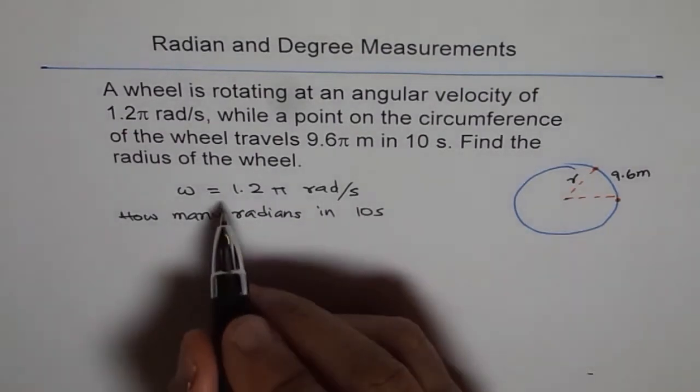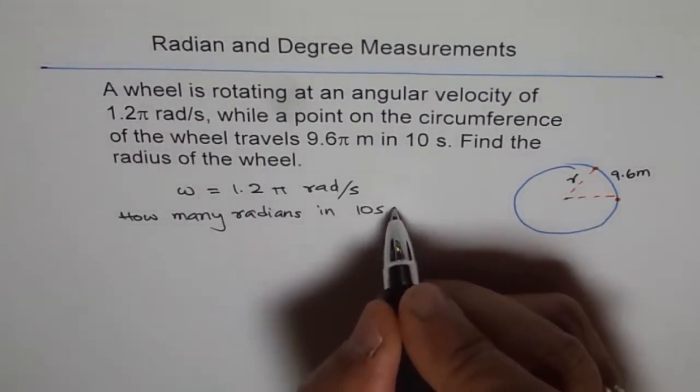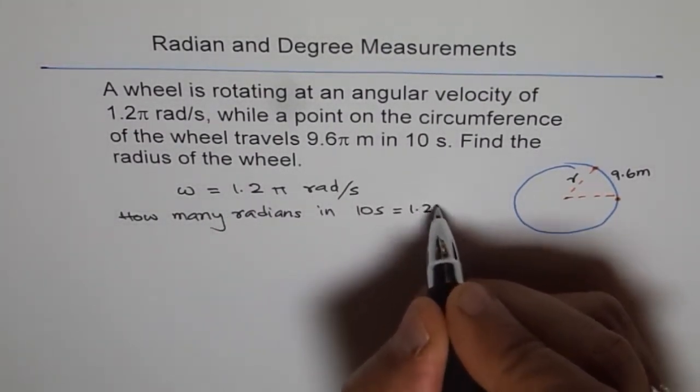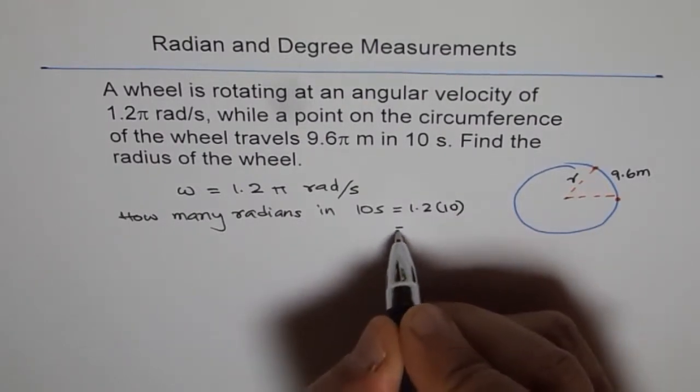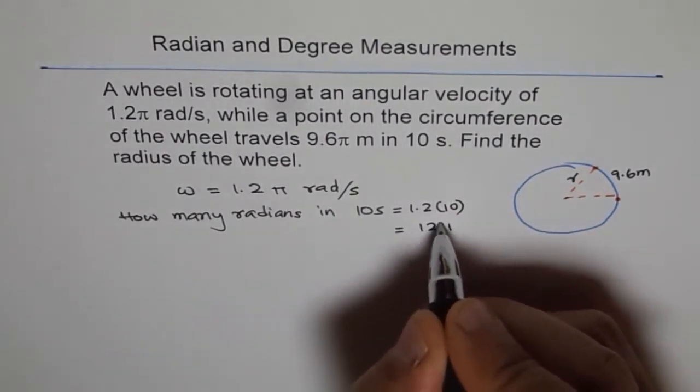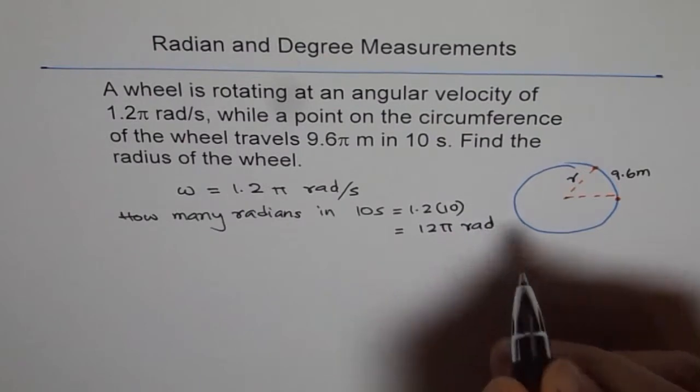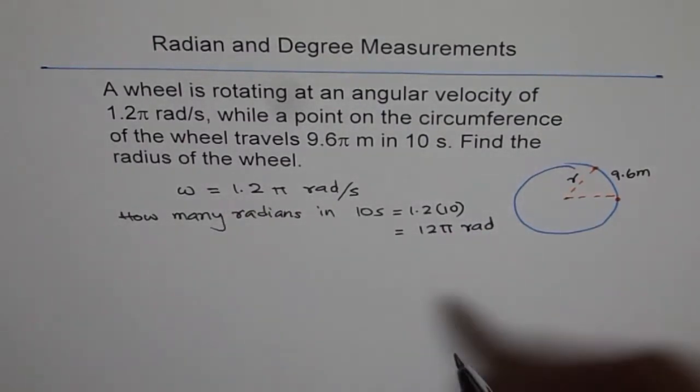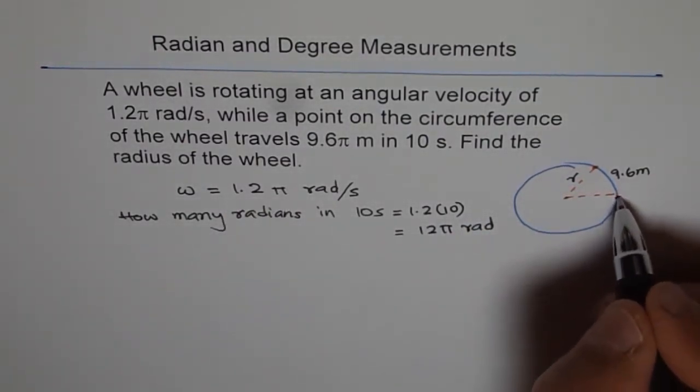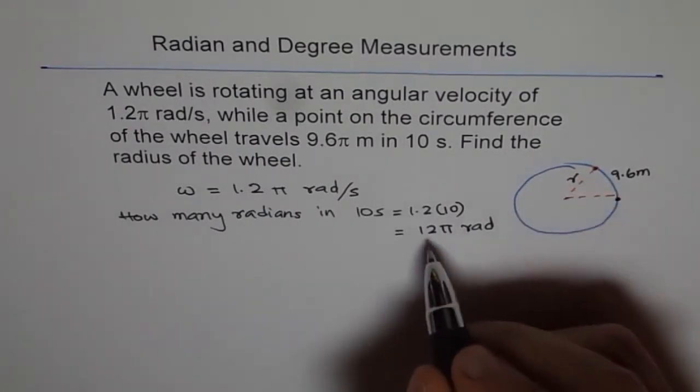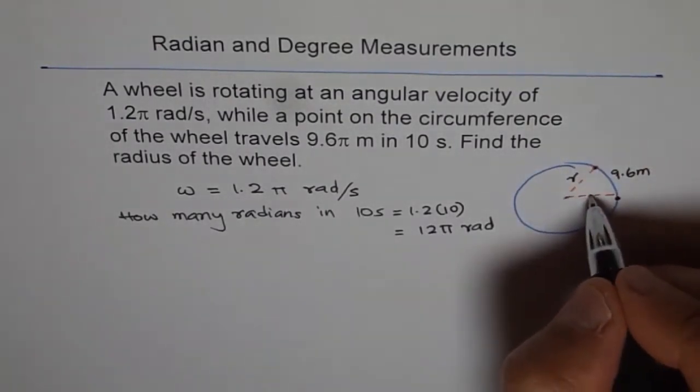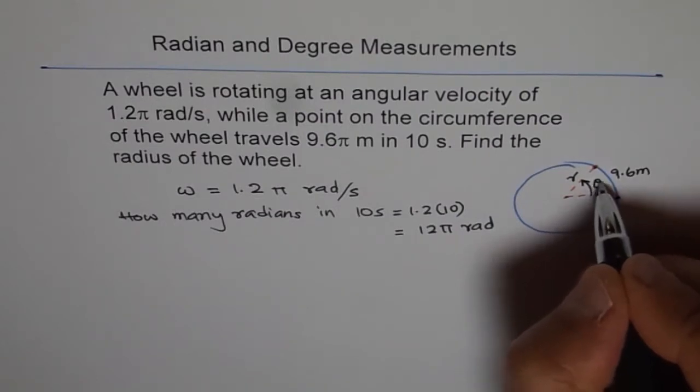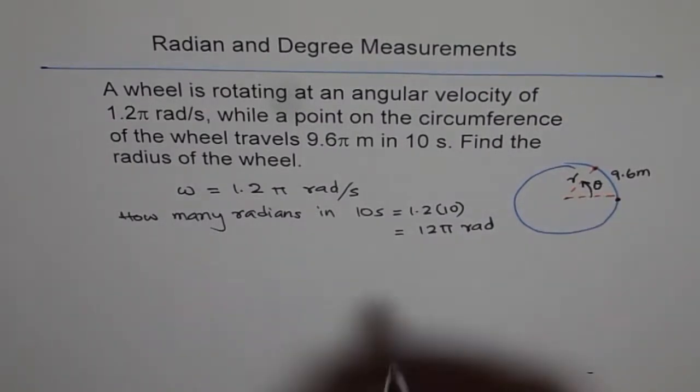So in 10 seconds, it will be 1.2 times 10, which is equal to 12π radians. So actually, in 10 seconds, according to the angular velocity, a point here should move through 12π radians, which is this angle theta. So that is the angle theta. So we know theta.